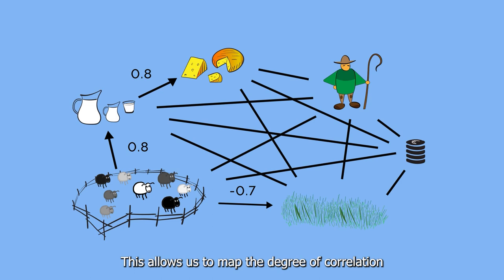This allows us to map the degree of correlation between different components in any complex system. Fuzzy cognitive mapping is routinely used in many fields to facilitate decision making.